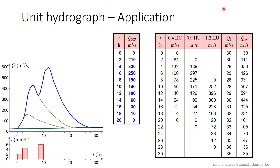Then, the final hydrograph is obtained by adding the three hydrographs to the base flow Qb, this latter being estimated from existing data. The final result, given in the last column of the table, produces the blue hydrograph here. And as the third part of the rain is delayed by about four hours compared to the first part, the final hydrograph presents a double peak.